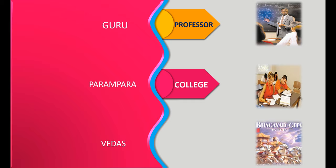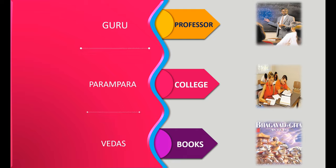There are four bona fide guru parampara: Sri Sampradaya, Brahma Sampradaya, Kumar Sampradaya, and Rudra Sampradaya. If the guru is connected to one of these four guru parampara Sampradayas, then only that guru is bona fide.